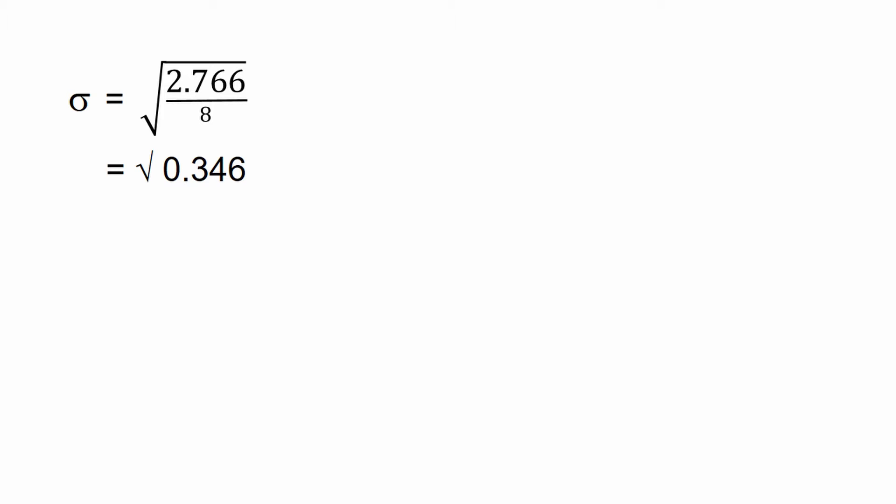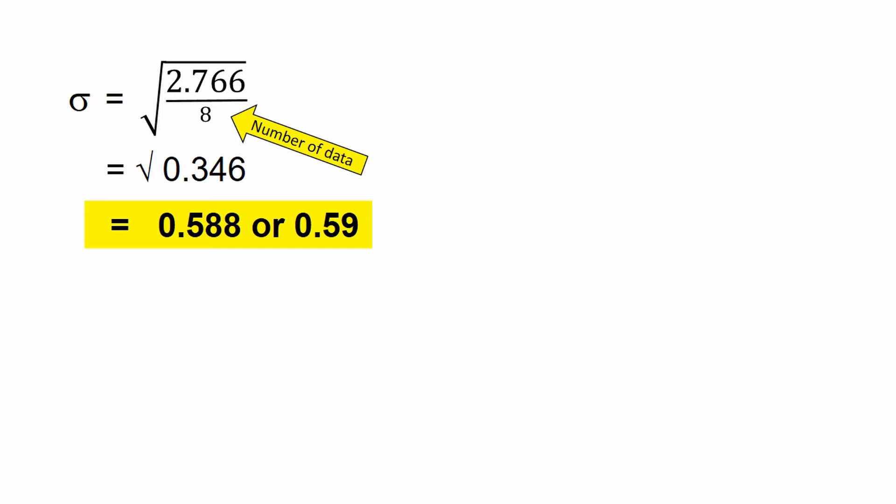In this example, we have eight available data. So that is the summation, 2.766, divided by 8. We then get the square root. That will give us a standard deviation of 0.588, or 0.59.